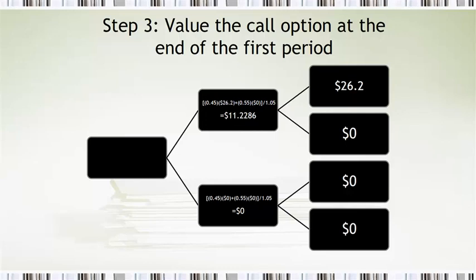Now it's real easy in the down scenario because the call option has zero value there. If it had some value, then of course we would insert those values in the formula. So we end up with zero in that case.